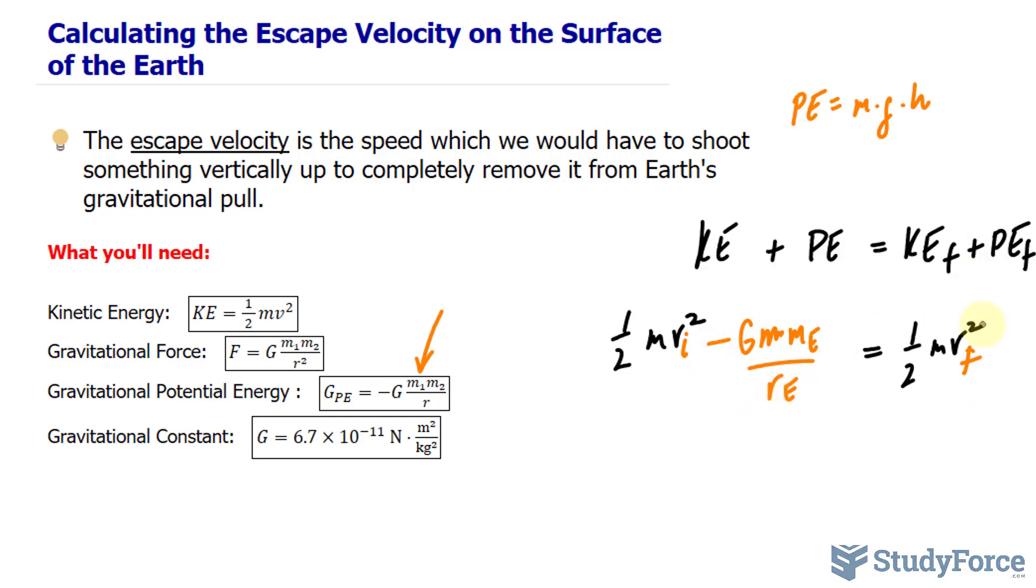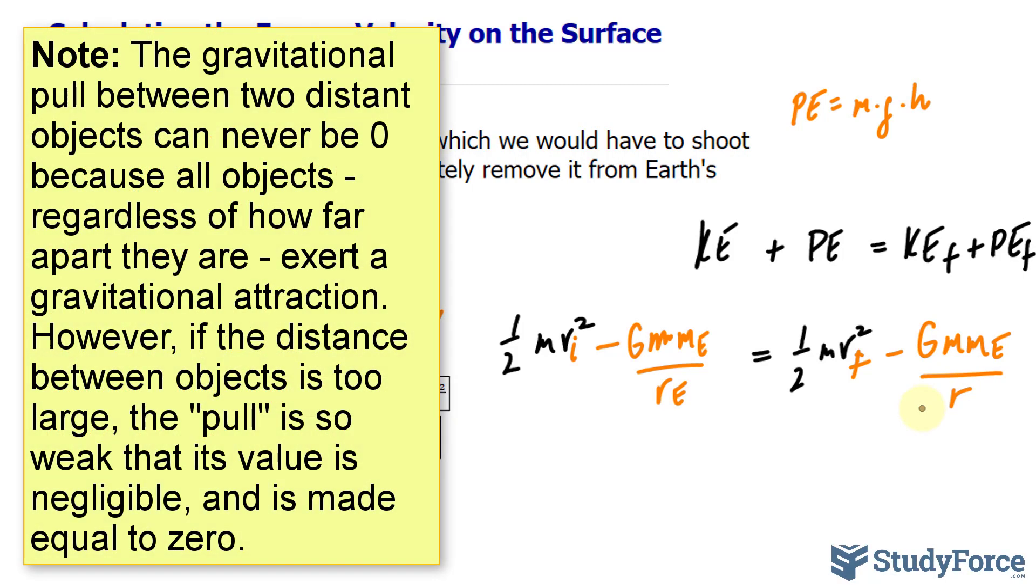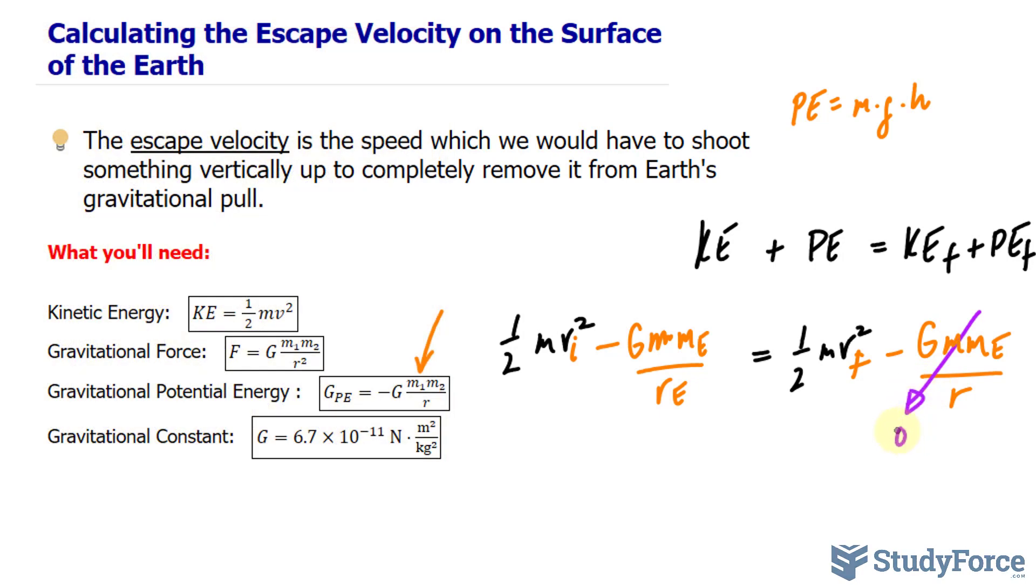On the right side, again, we'll have the same expression. So I have minus G times m times the mass of the Earth divided by a distance that is infinitely far away from the Earth where the gravitational pull is almost nothing. So by setting r equal to a very large number, technically this whole term goes to zero. It's like taking the limit as r approaches infinity.